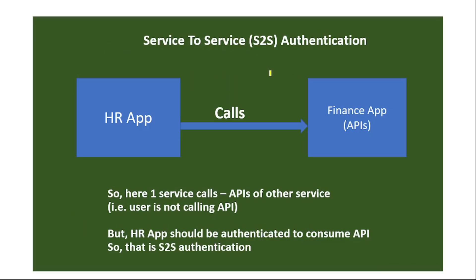Let's try to understand S2S authentication with this diagram. We have a finance app with APIs, and we have another app — let's say an HR app — and this HR app calls the APIs from the finance app. Here one service calls the API of another service and there is no user calling the API. But we need to make sure the HR app is authenticated to consume the API, and hence it is S2S authentication.